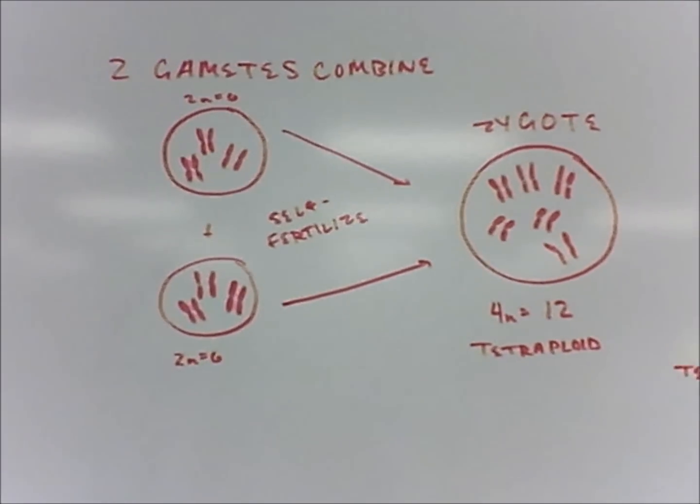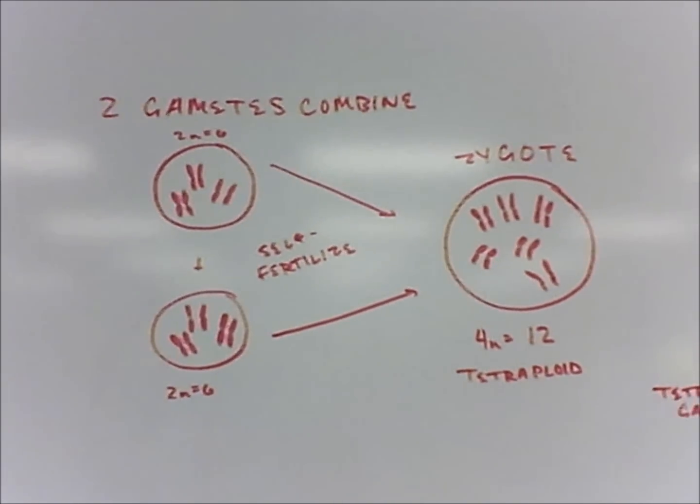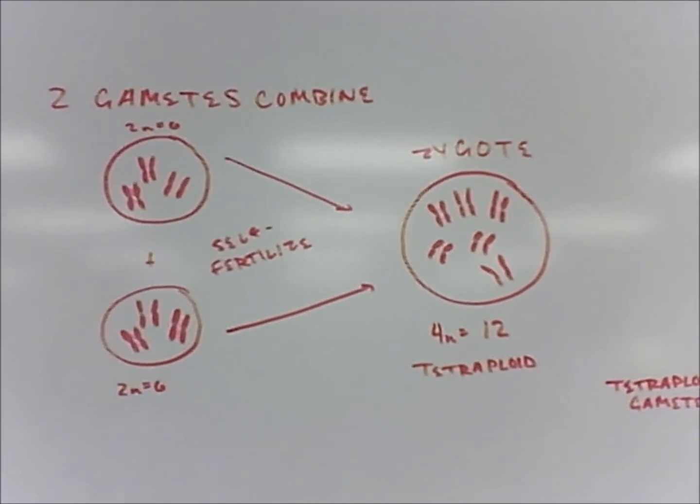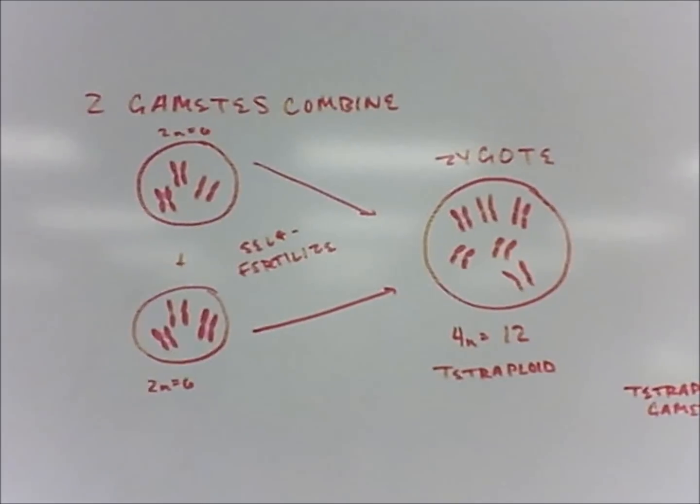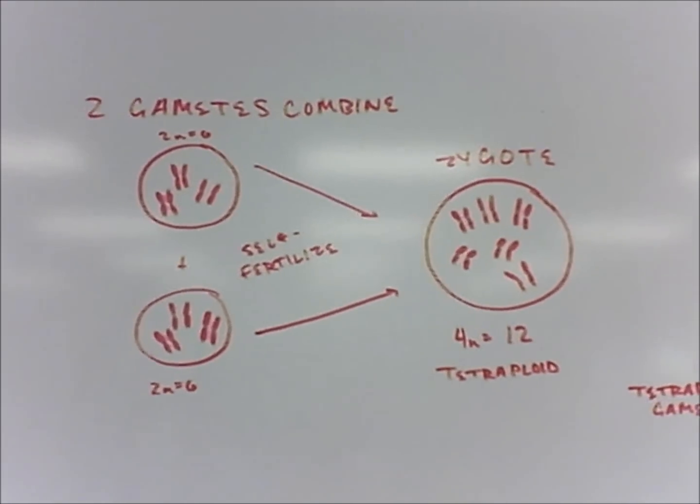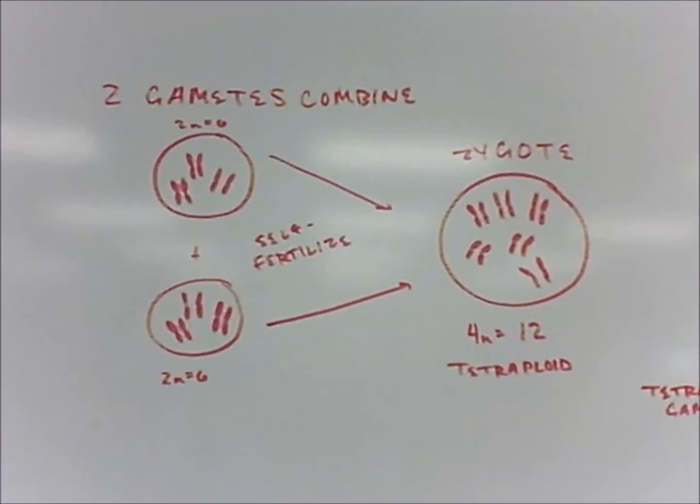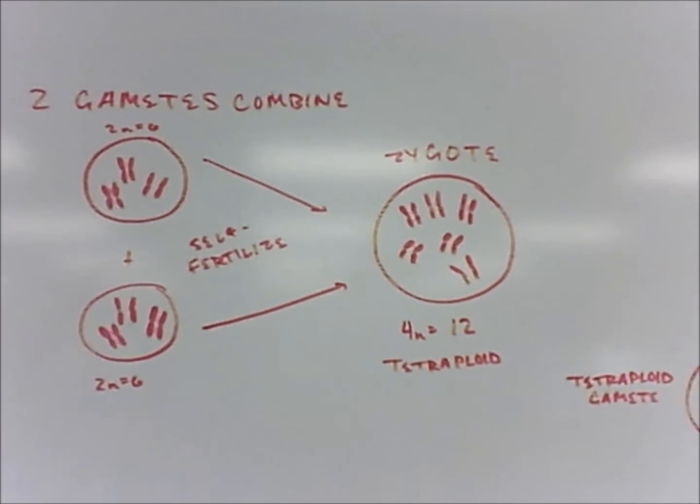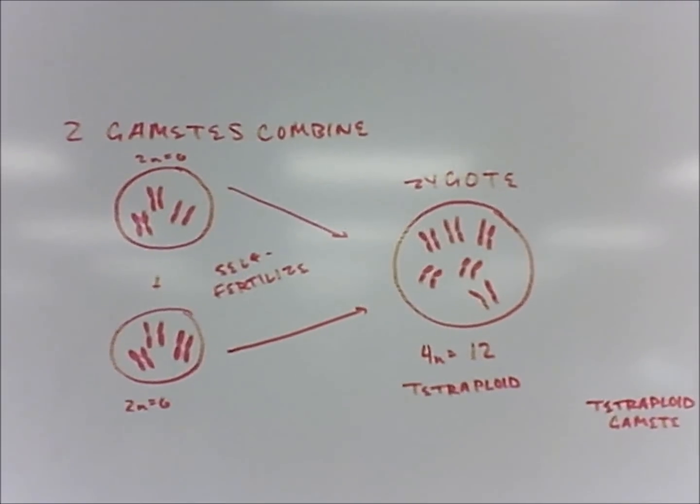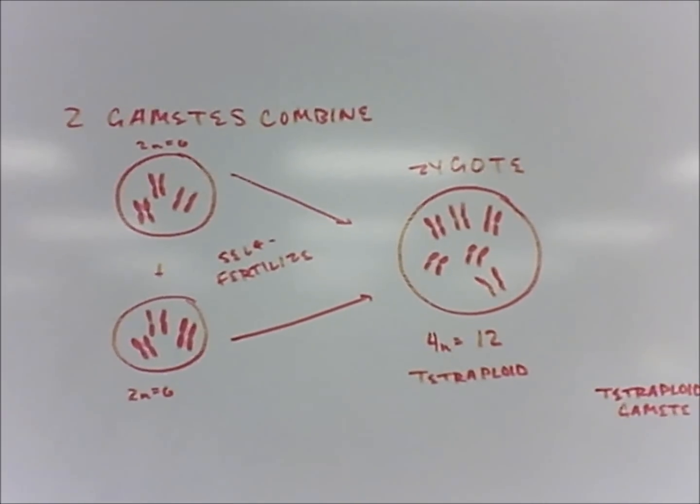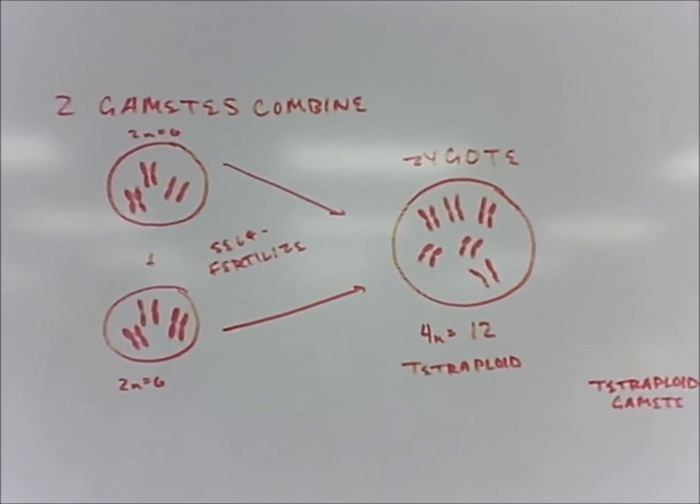The result of autopolyploidy produces a tetraploid organism that can't interbreed with the original diploid population. According to the biological species concept, in one generation a new species was produced because of the tetraploid's reproductive isolation.